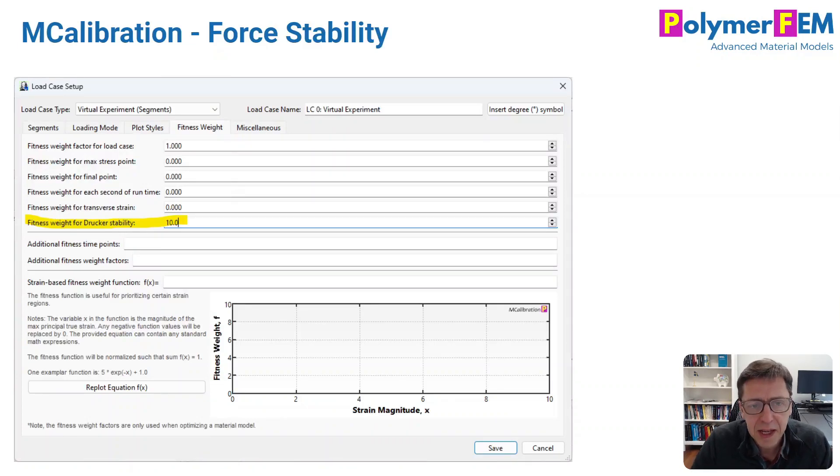Finally here, in MCalibration, if you want to make sure your material model is Drucker stable, you can add a fitness weight for that, and I have a video that talks about that, how you can enforce that condition.